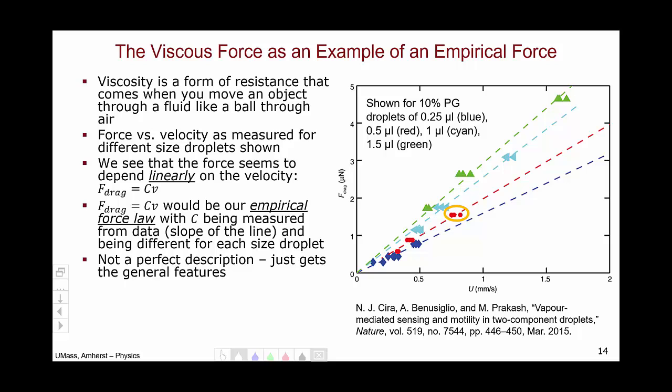Here, I've highlighted three red dots, and we can see that this F equals Cv is not a perfect description. It's got some noise in it. This is another characteristic of empirical forces. Empirical forces don't get things exactly, but they tend to get the general features. As I've already said, the empirical forces we'll study in this class will be spring forces and static and kinetic friction. We'll explore these in labs.